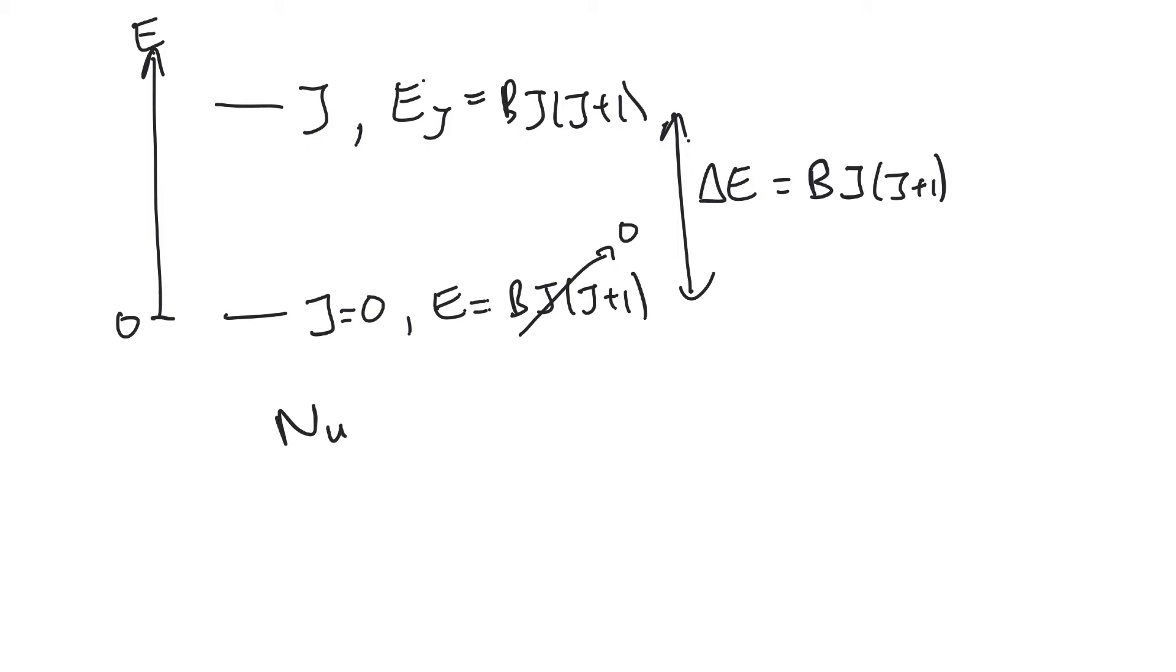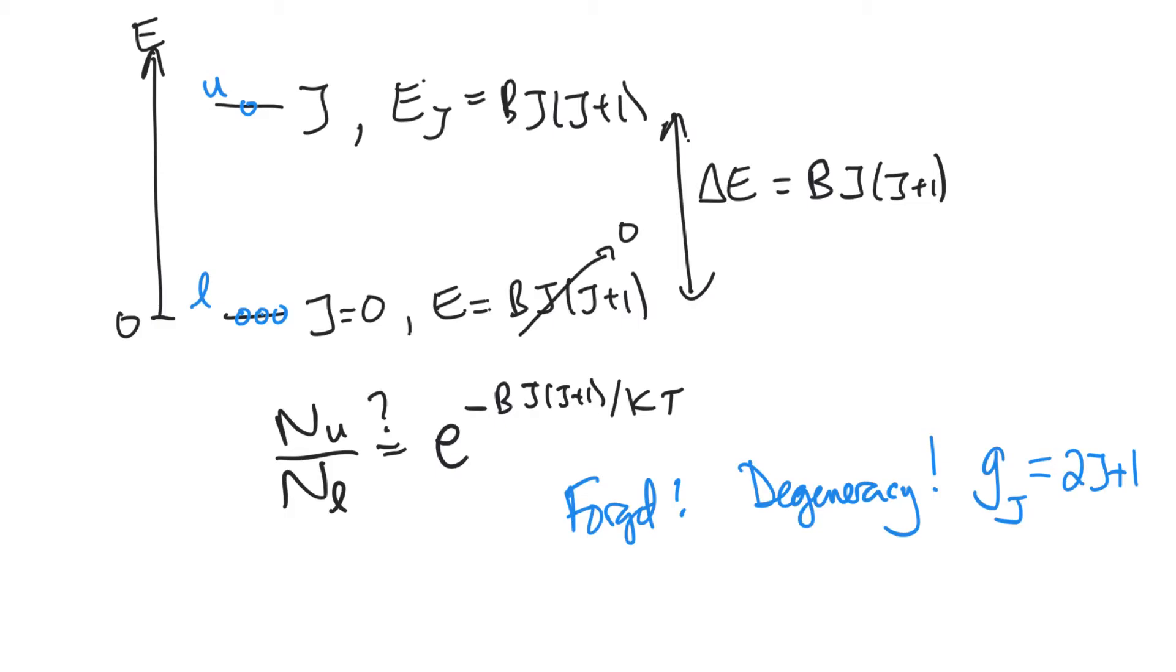We take our Boltzmann equation and say how many are in the upper compared to the number in the lower. Our upper is up here, our lower is down here. That is, presumably—it turns out it's not—e to the minus that change in energy, so B·J(J+1) on a per molecule basis, divided by kT. It turns out we have forgotten something. The thing we have forgotten is the degeneracy. We're looking at the levels, but each level has multiple states. For the rotations, the number of states in each level is 2J+1. So we need to take that into account.